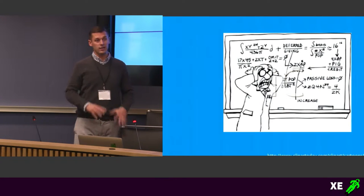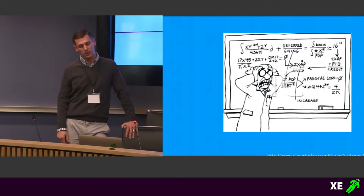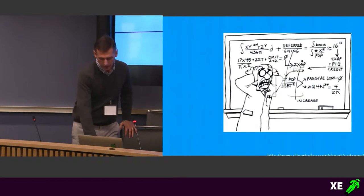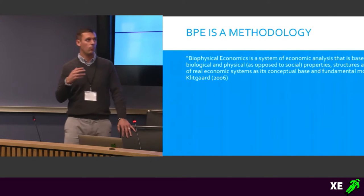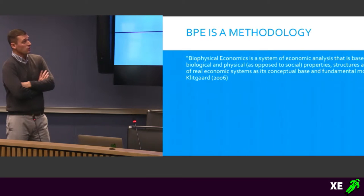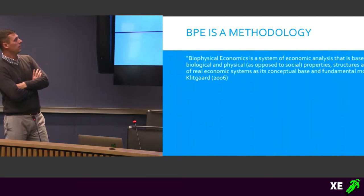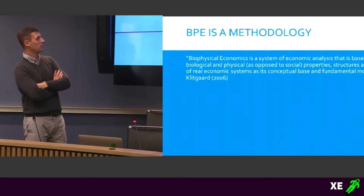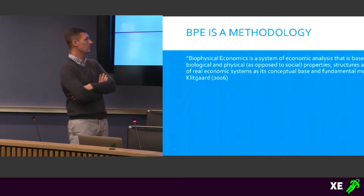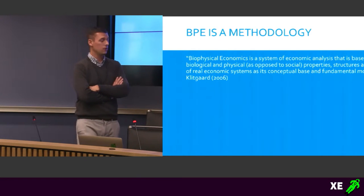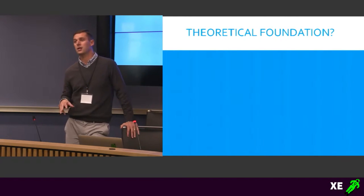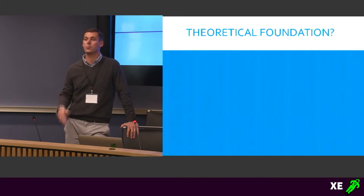Trying to figure out what any discipline is can be a very difficult thing to do — trying to piece together different parts into some overarching theory. That's basically where I started, with a publication that Charlie and Kent put together a while ago. There is a definition of biophysical economics out there, believe it or not. Biophysical economics is a system of economic analysis based on the biological and physical, as opposed to social, properties, structures, and processes of real economic systems. That was put out in 2006. The problem I see with biophysical economics right now is that it lacks a theoretical foundation, a unifying principle.